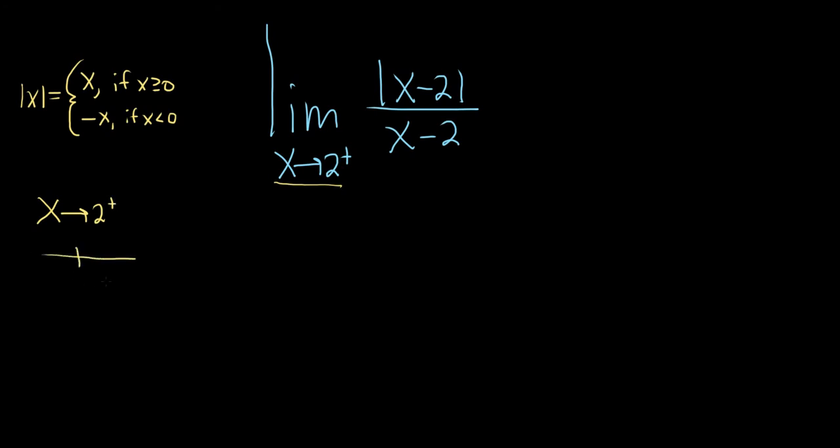That means that x is bigger than 2, right? Because here's 2. If it's approaching from the right, that means it's on the right and going towards 2. That means it's a bigger number. So x is bigger than 2. That means x minus 2 is bigger than 0.